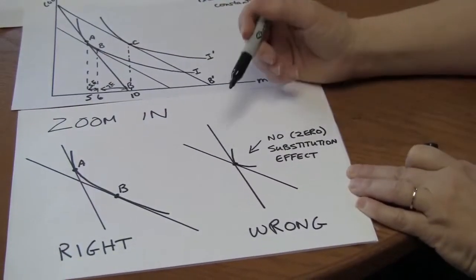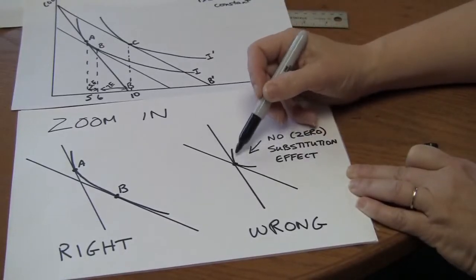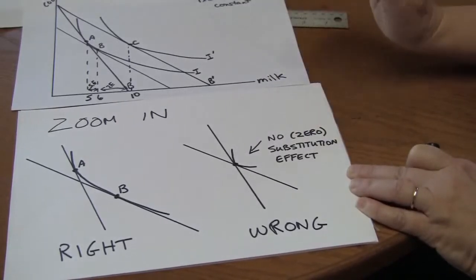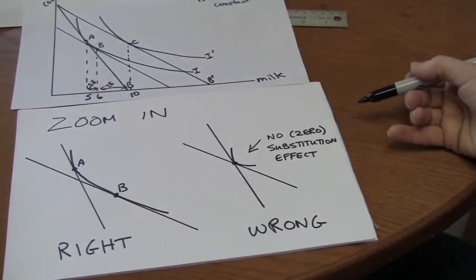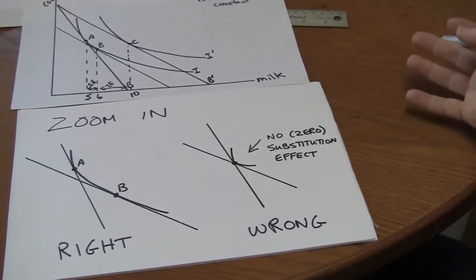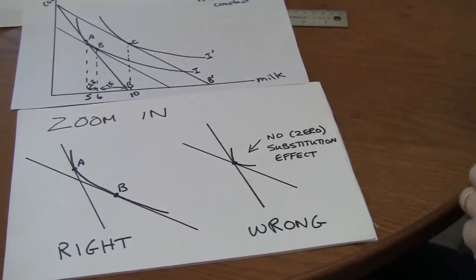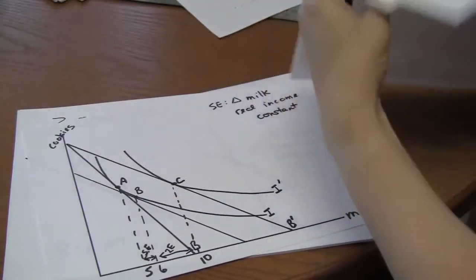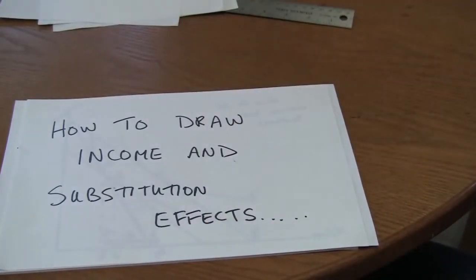The most common mistake that people make when drawing income and substitution effects is to have the indifference curve tangent at the point where the budget lines cross. That's a problem because here you have no substitution effect at all. I mean sometimes you might want to have a zero substitution effect, but if you're trying to show a positive substitution effect you're not going to get very far with that. So anyway, that is how to draw income and substitution effects by Mumbling Professor.